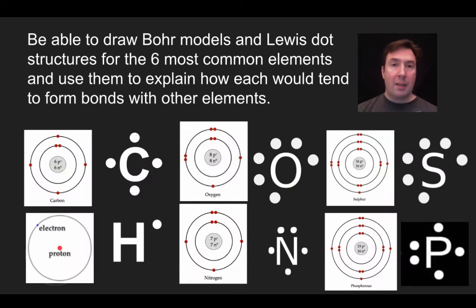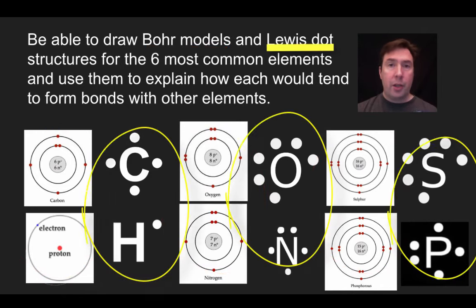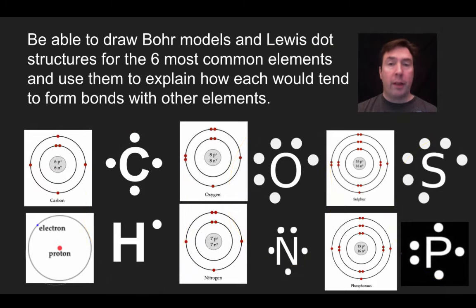When we look at the six major elements, we're going to show two different models. On the left, we're showing a Bohr model. The Bohr model is going to show you the nucleus, which includes the protons and neutrons, and then it's going to show the various electron orbitals or electron shells where electrons are found. The Lewis dot structure is just going to use the symbol of the element along with the valence electrons, the electrons that are found in the outermost shell of that element.